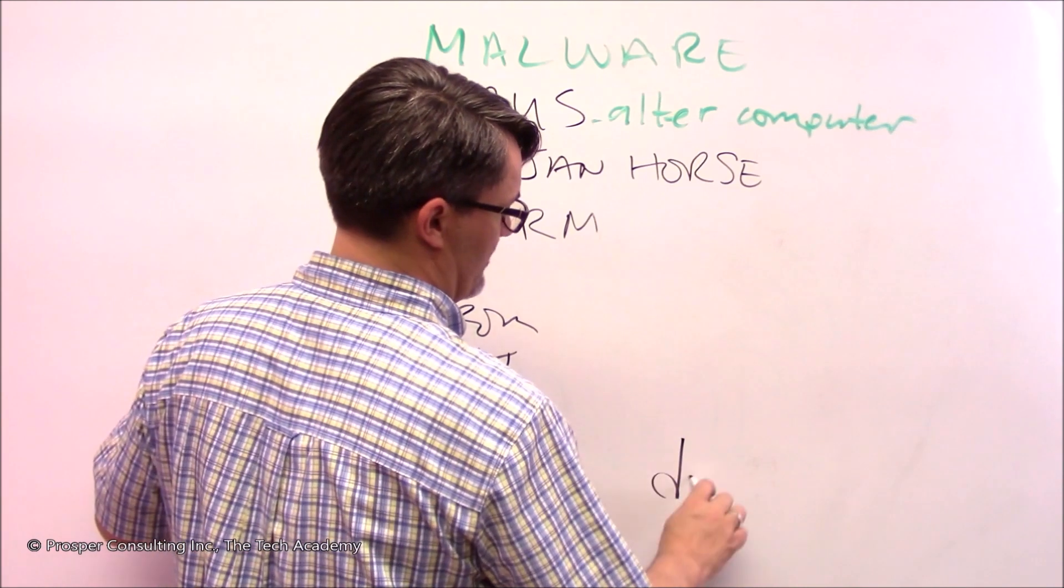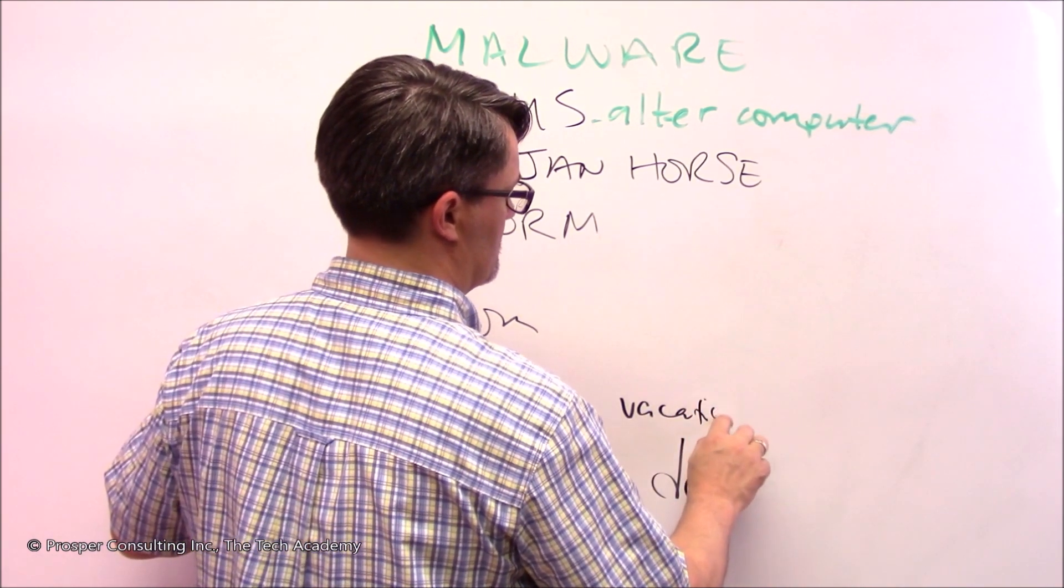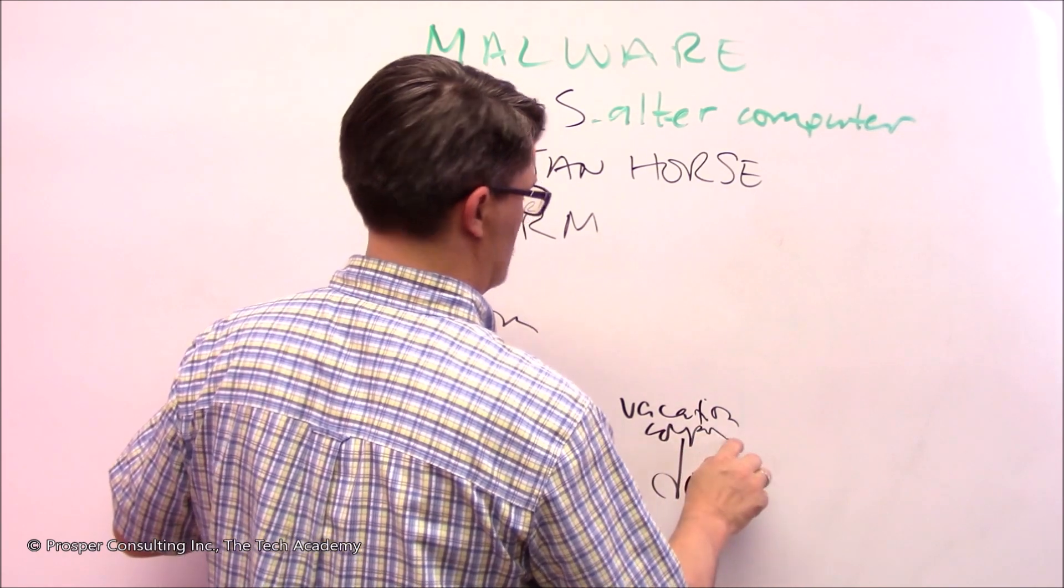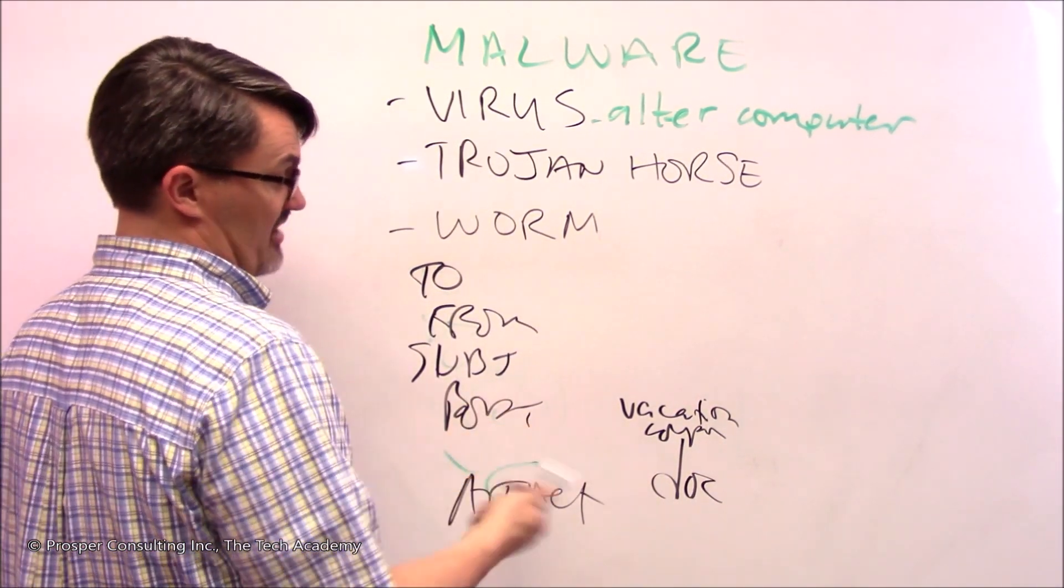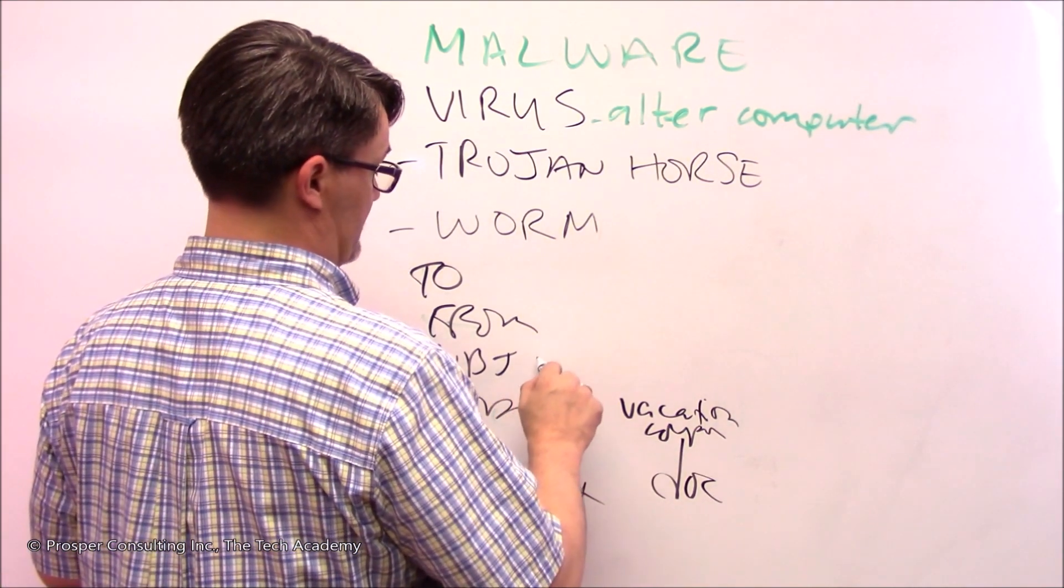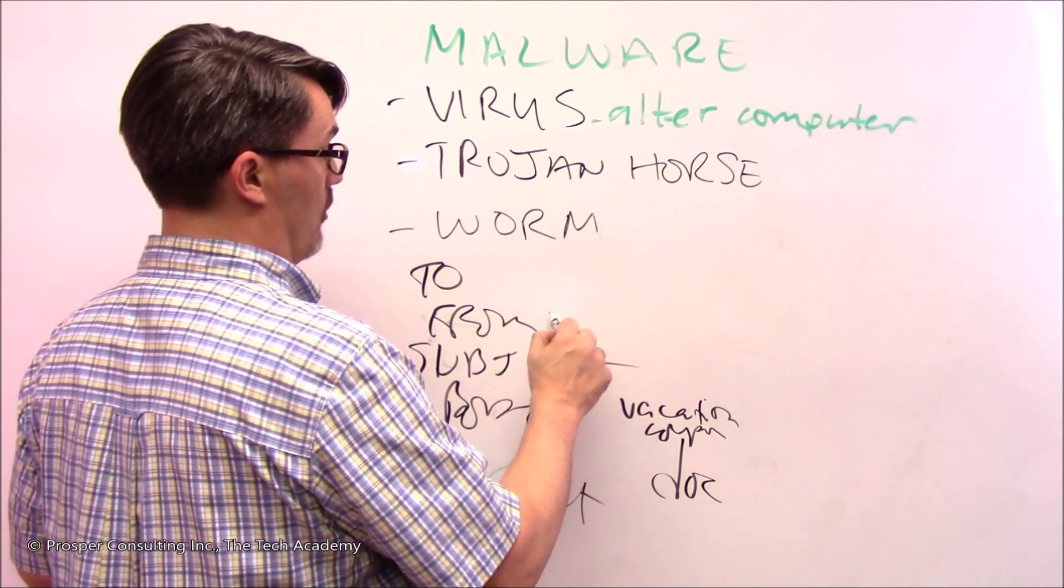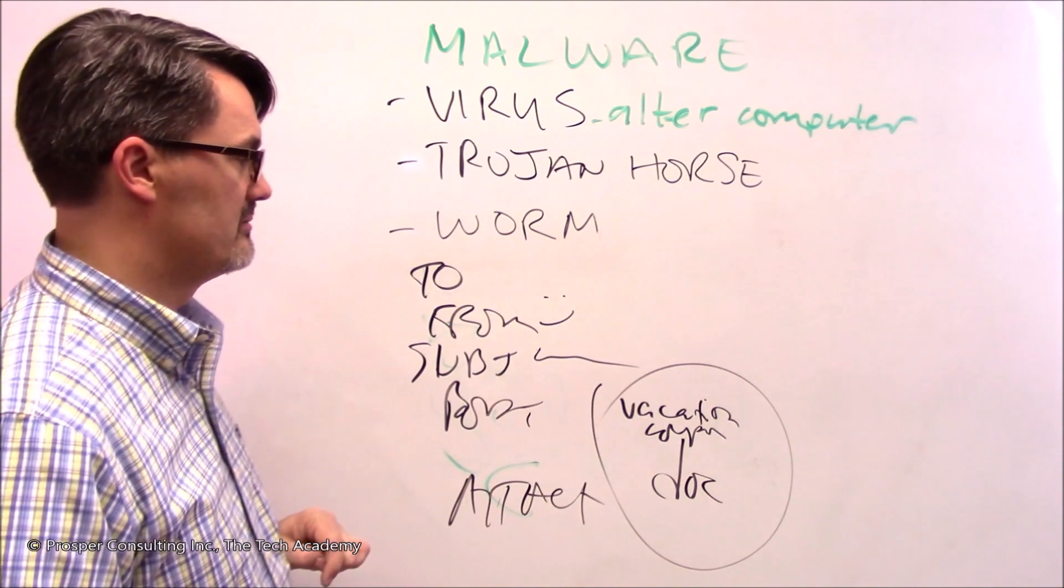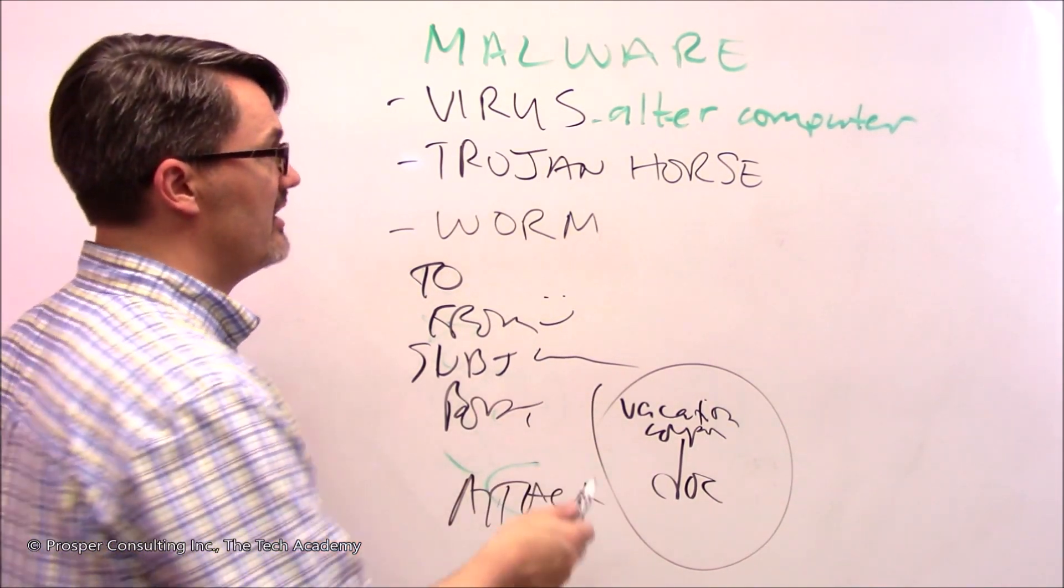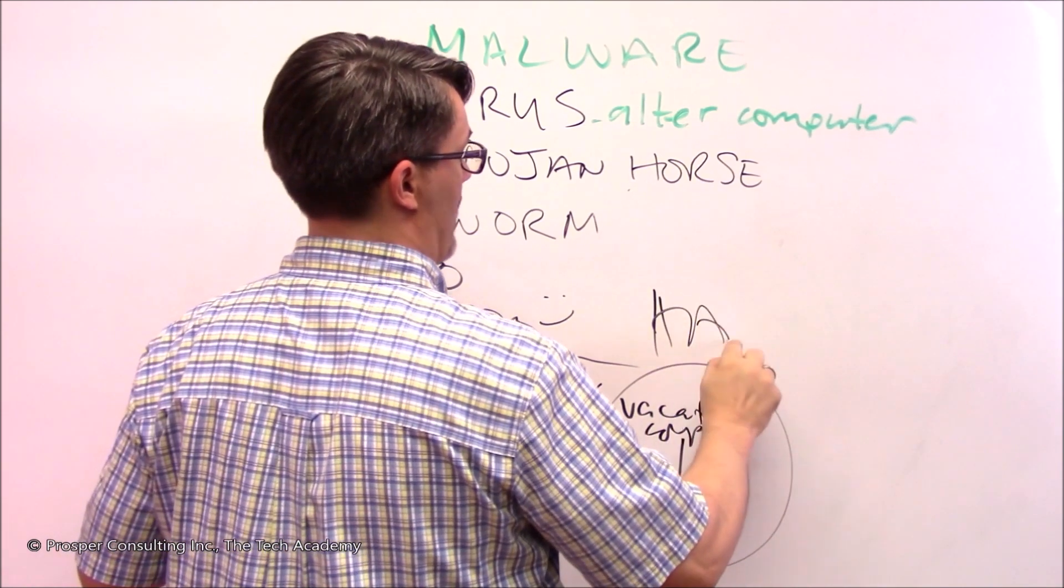It's just a document, let's say it's called 'vacation coupon.' This looks not suspicious at all - the subject is 'here's the coupon you asked for' and it's from someone you know. You open that document, but it's not what it says it is. Instead, it's a computer program that goes in and erases your hard drive.